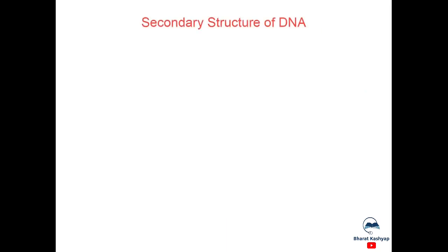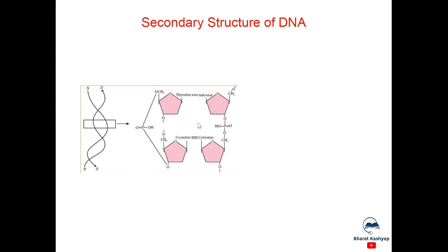Now, let us understand secondary structure of DNA with the help of diagram. These are two strands of poly nucleotides and are anti-parallel that is run in opposite directions. This is showing sugar, phosphate, sugar backbone of DNA. The nitrogen bases are perpendicular to this backbone and faces inside.